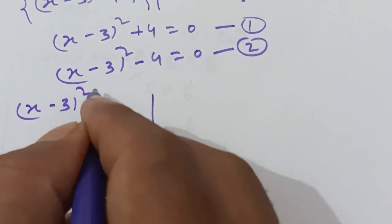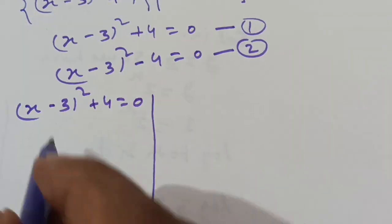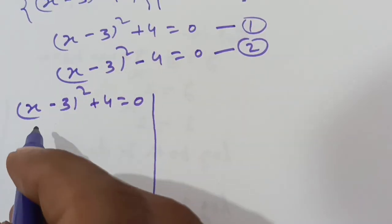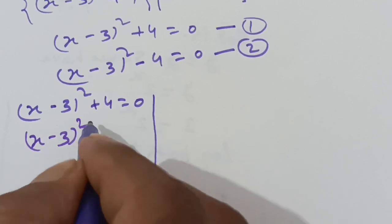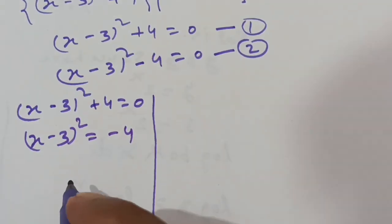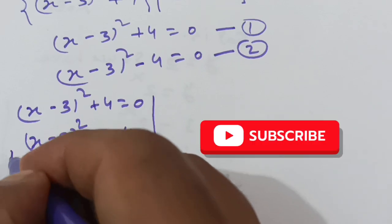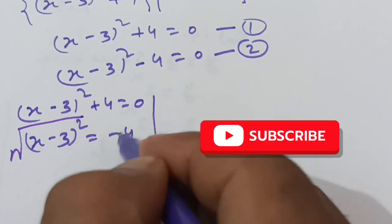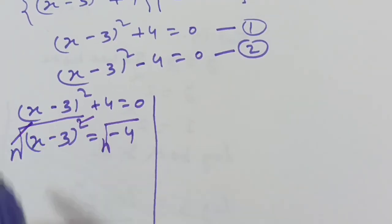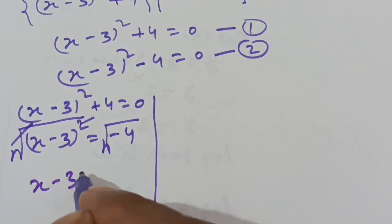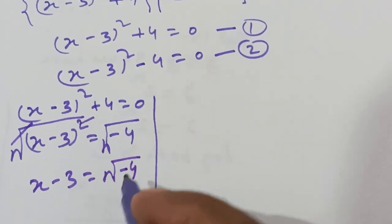For equation 1: (x minus 3) squared plus 4 equals 0. Rearranging gives (x minus 3) squared equals negative 4. Taking the square root of both sides, x minus 3 equals the square root of negative 4.